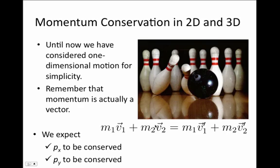As a result of vector equations being completely separate in the x and y directions, we expect momentum conservation to hold separately in the x direction and in the y direction. In other words, if we write down momentum conservation for each of these two directions, each velocity vector is replaced by the x component and y component of velocity for particles one and two.